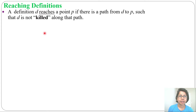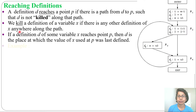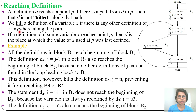Hi, in the previous lecture I discussed reaching definition. A definition D reaches a point P if there is a path from D to P such that D is not killed along the path. For each kill, we are killing all other definitions on the same variable. I also discussed some examples on reaching definition.